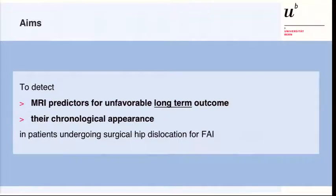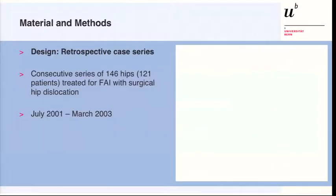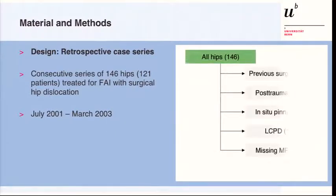The aims of this study were to detect MRI predictors for an unfavorable long-term outcome and to characterize the chronological appearance of these findings in patients who underwent surgical hip dislocation for impingement. We performed a retrospective case series of a consecutive series of 140 hips treated for impingement with surgical hip dislocation between 2001 and 2003.